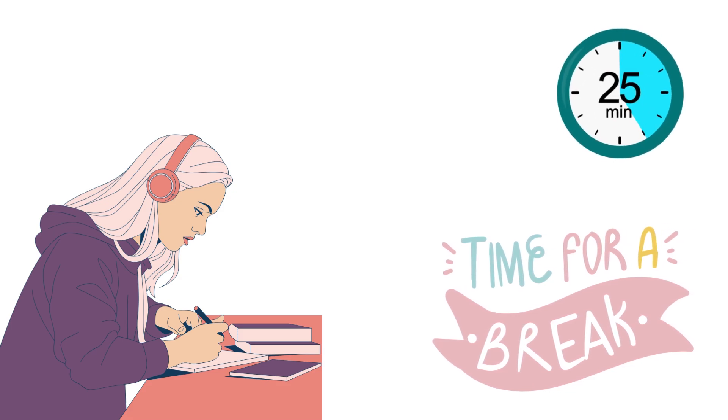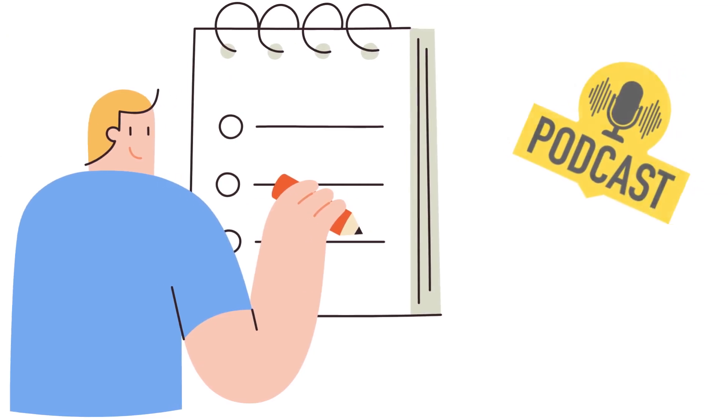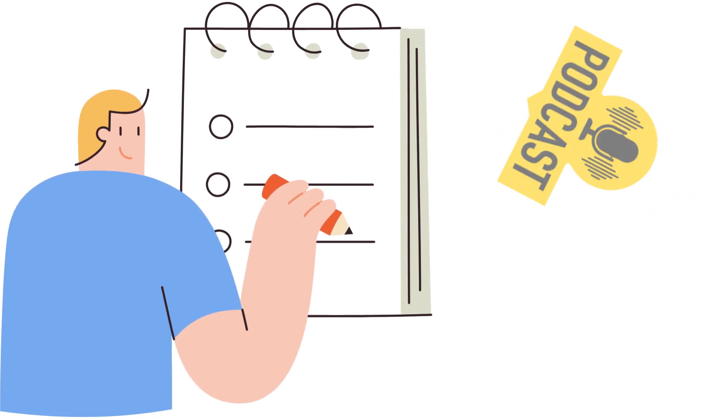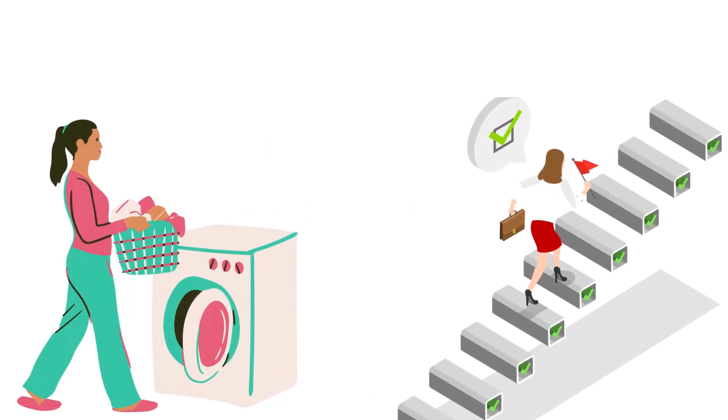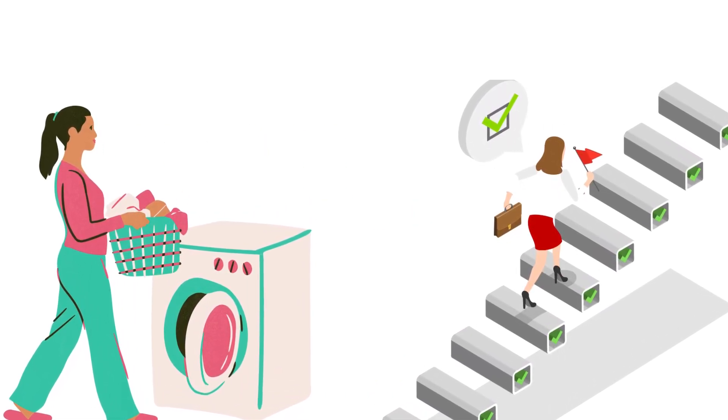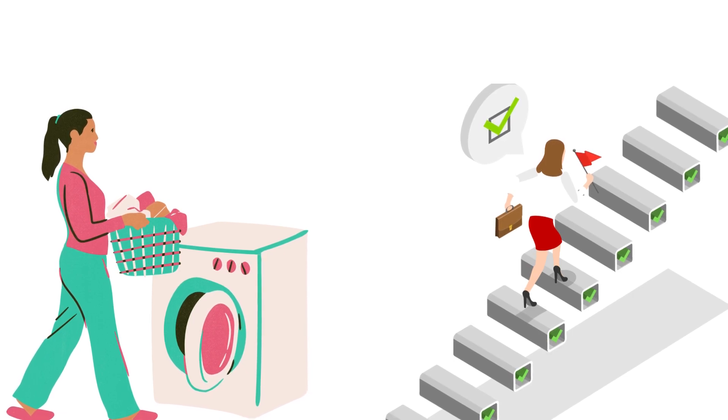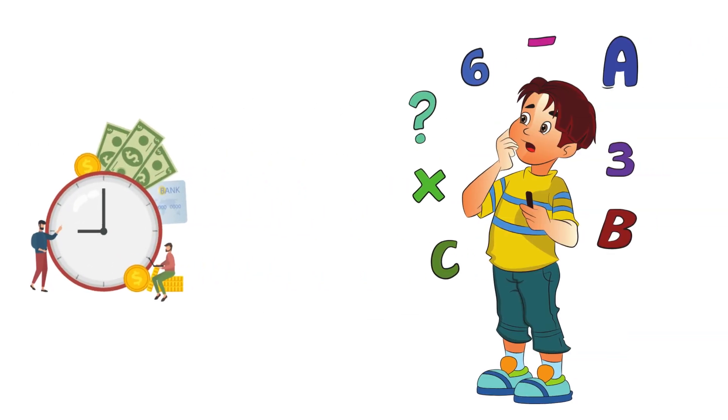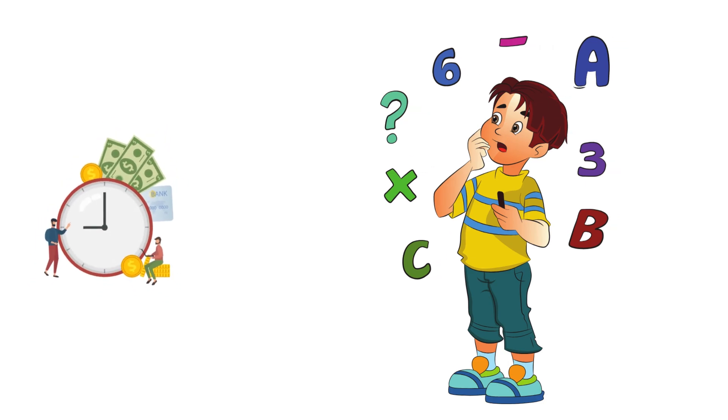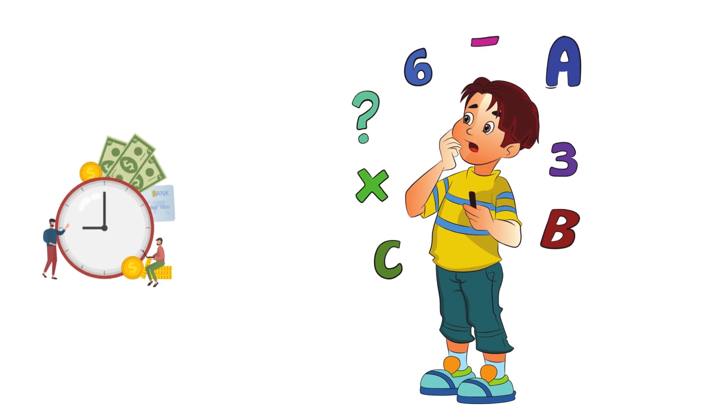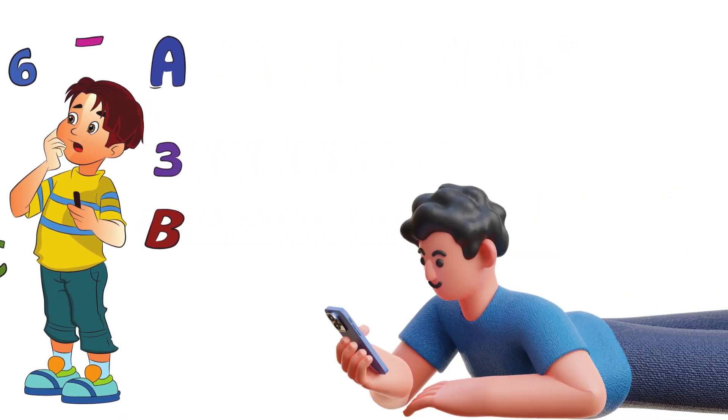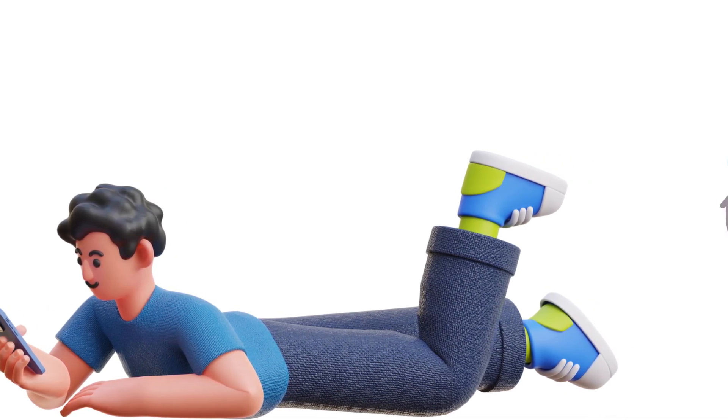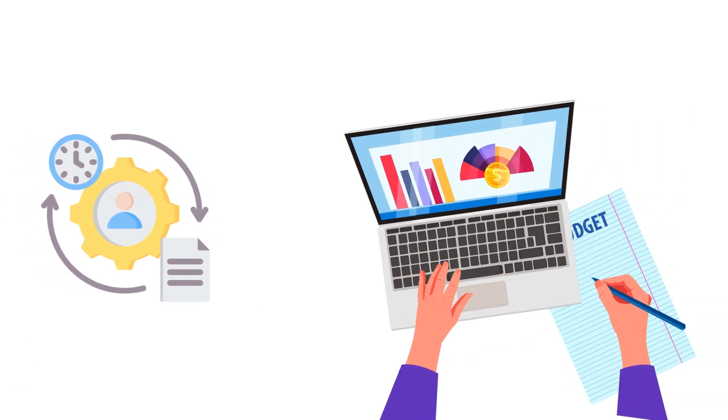3. Habit stacking. Attach a new interest to an existing habit. Learning a language? Listen to podcasts while you do your daily workout. 4. Use transition times. That 30-minute commute or the time spent waiting for your laundry can be golden opportunities for progress. Queue up a tutorial video or practice mental math. Yes, that counts as an interest if you want it to. 5. Say no to time wasters. I'm looking at you, endless social media scrolling. Use that time for your interests instead.